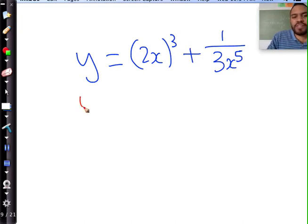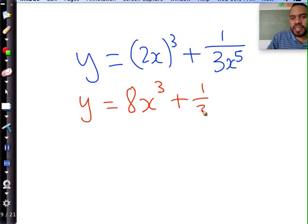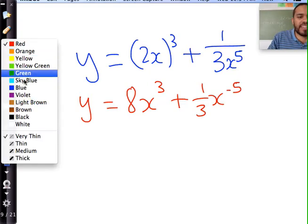So we first need to write this in a mimic polynomial form. Let's multiply this out. 2 cubed is 8, and x cubed is just x cubed. This is going to be plus 1 over 3. Take the x to the top, which becomes x to the minus 5. Now we can go and apply the derivative.